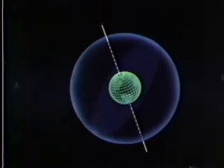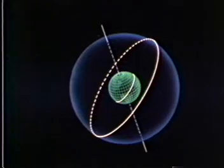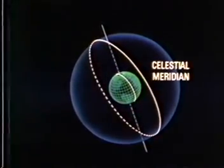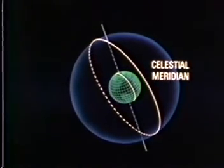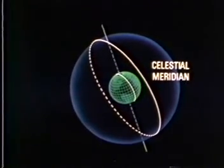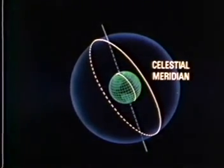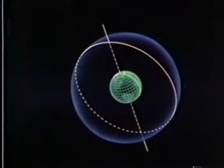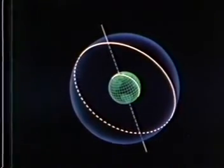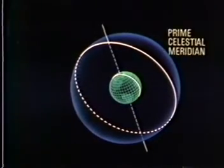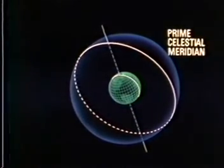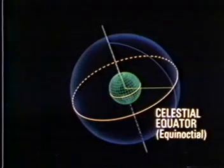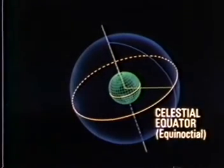A plane through the center of the celestial sphere produces a great circle on the surface. Great circles containing the axis are called celestial meridians when they are projections of terrestrial meridians on the celestial sphere — they are extensions of the meridians on Earth. For example, the terrestrial Greenwich meridian, or prime meridian, extends out to the celestial sphere to become the celestial meridian of Greenwich, or the prime celestial meridian. The great circle perpendicular to the axis is called the celestial equator, or sometimes the equinoctial.